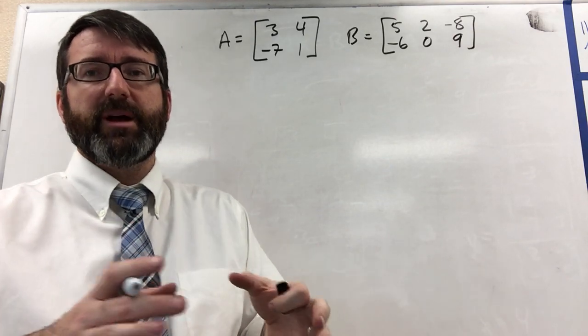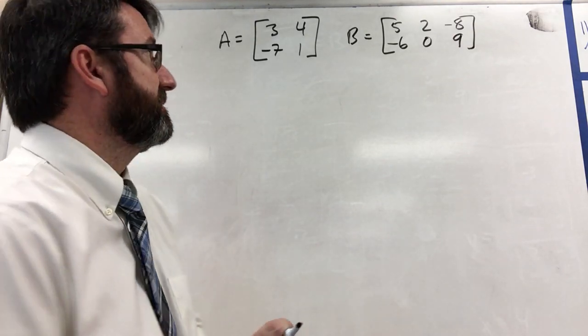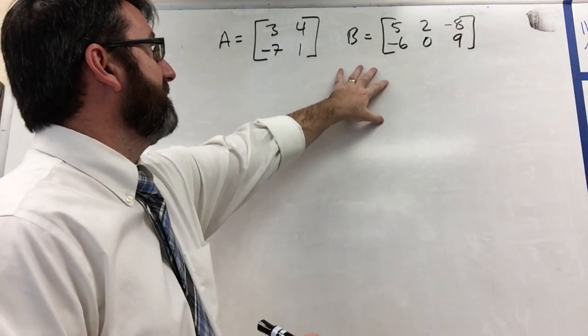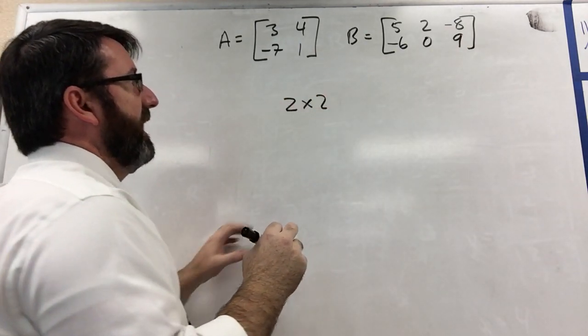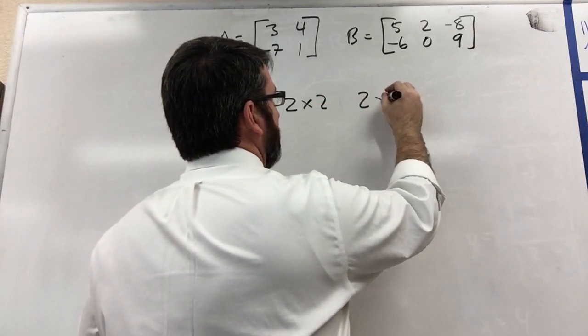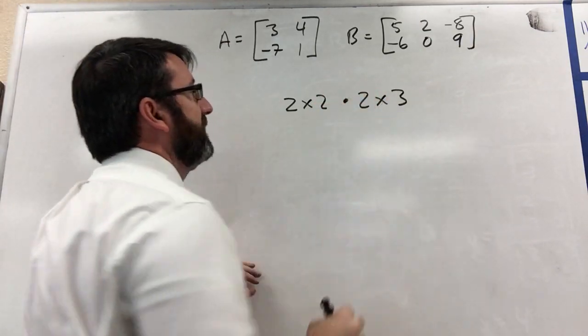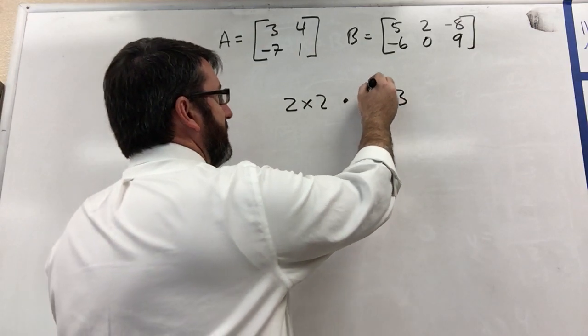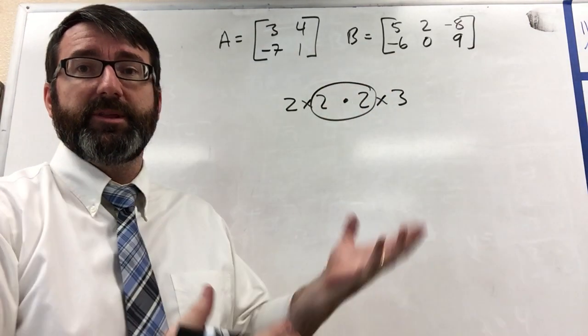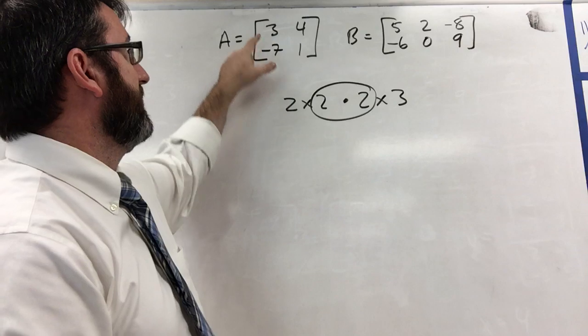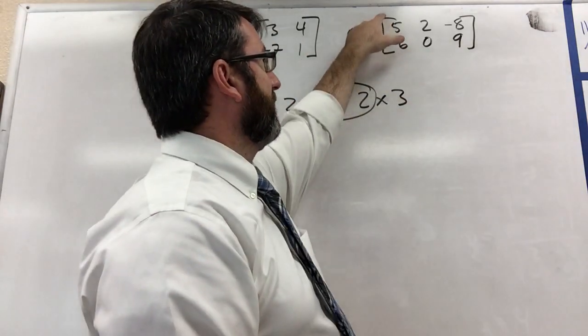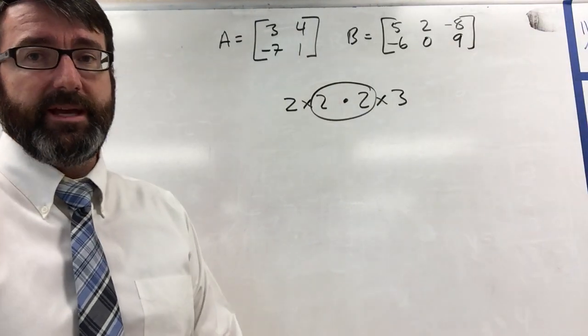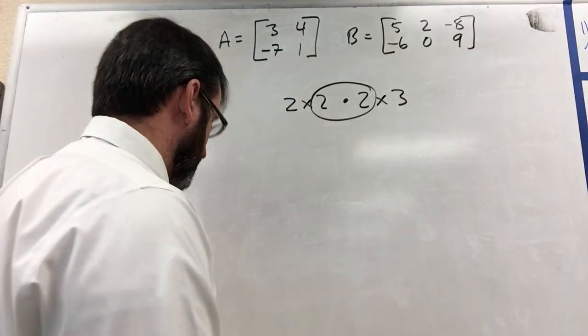So let's start by checking to see if that is going to be possible. A times B: A is a 2 by 2 matrix, and B is a 2 by 3 matrix. So if we multiply those together, notice that these two numbers here are the same, so this is possible. In other words, the number of columns in matrix A is equal to the number of rows in matrix B. So A times B will work.